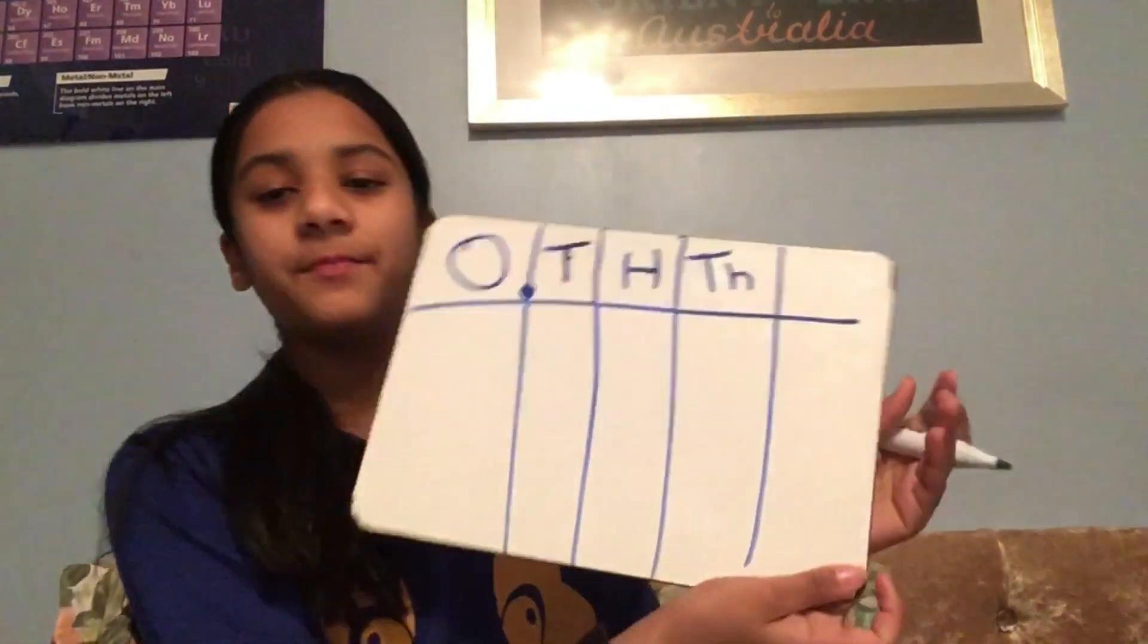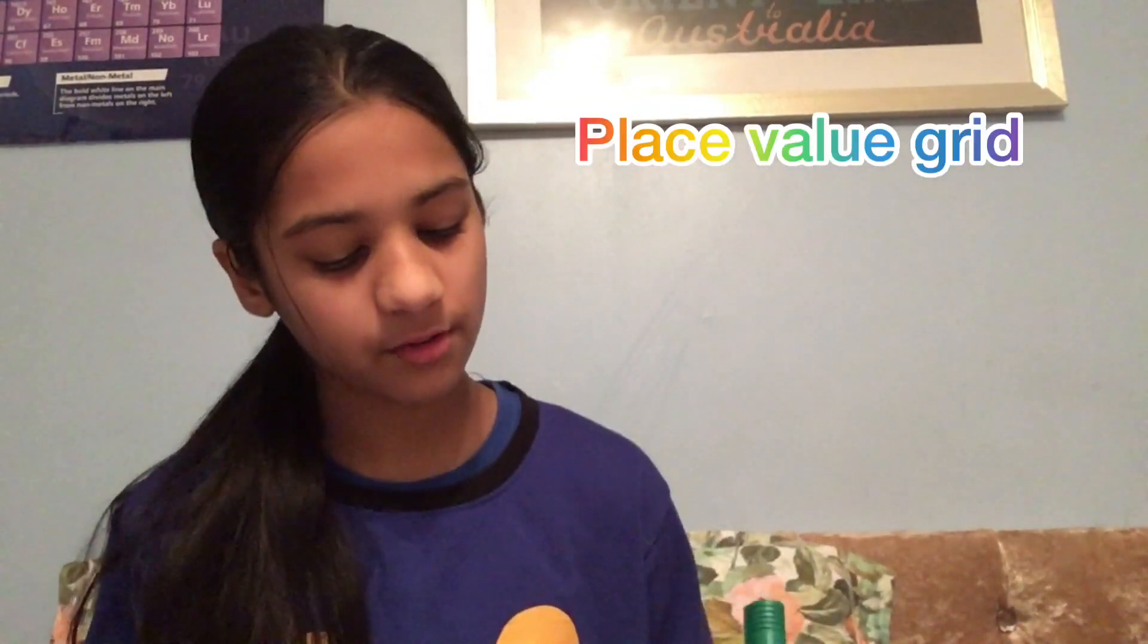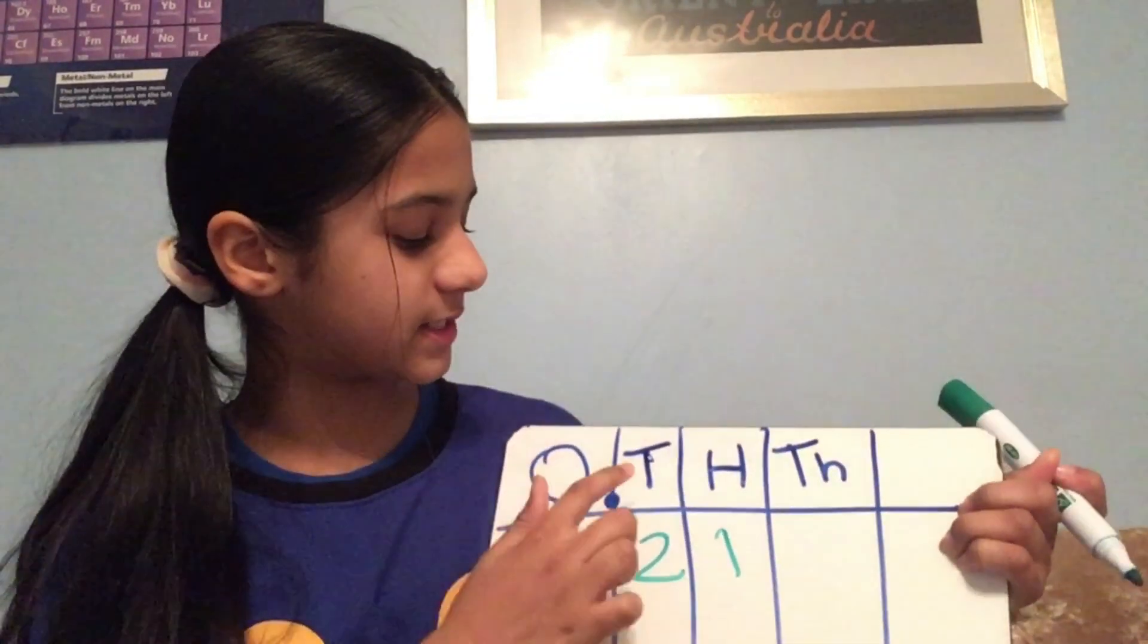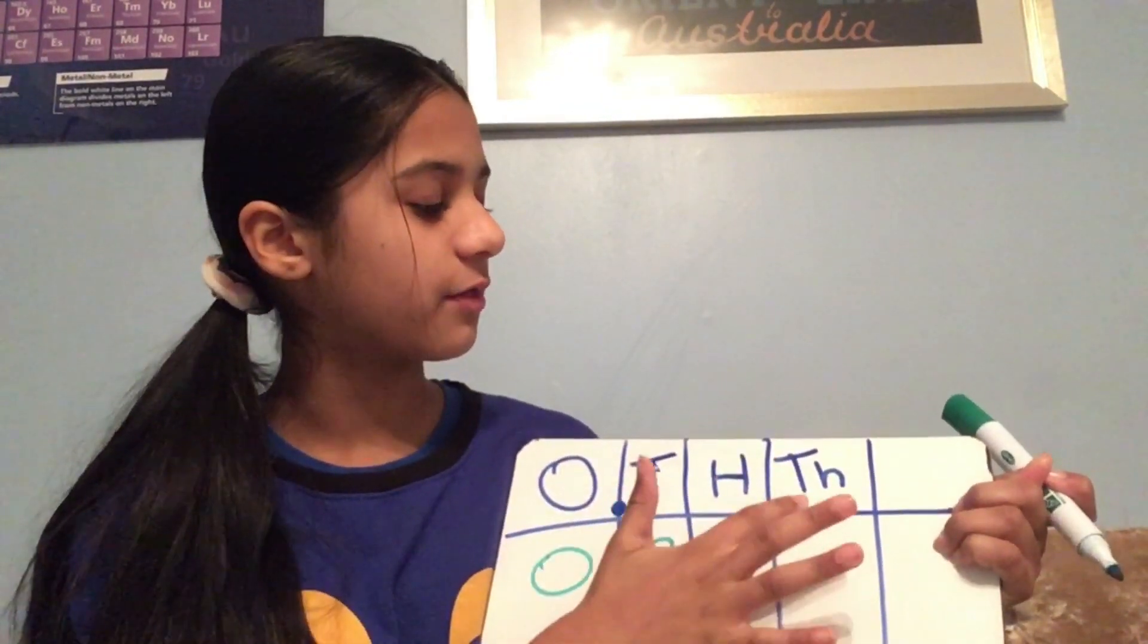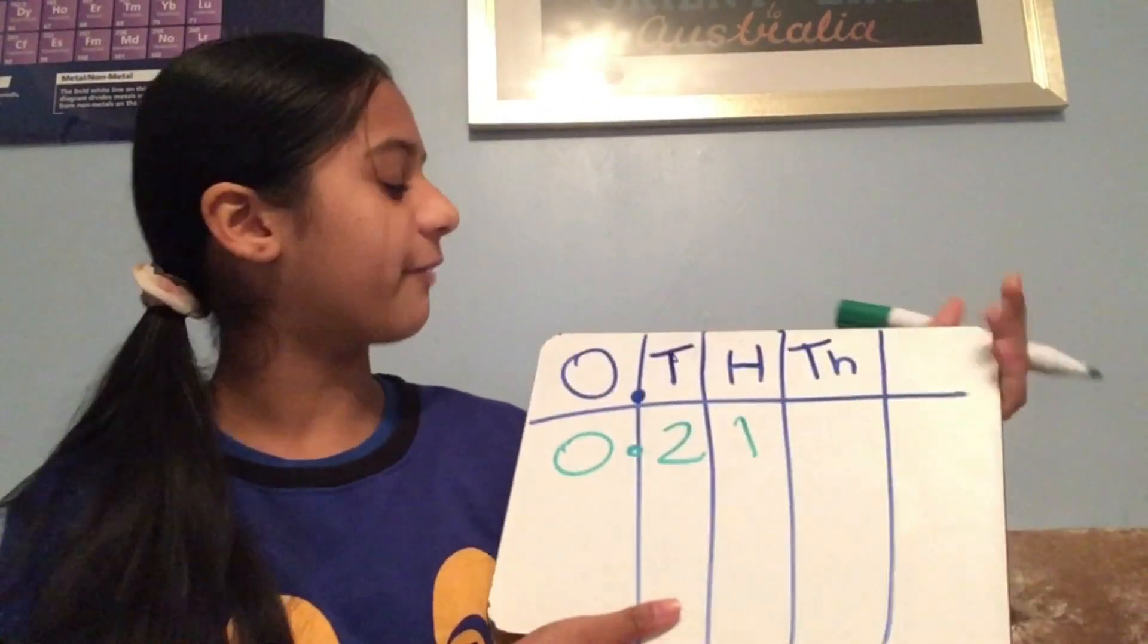Now, what I've drawn here is almost like a place value chart to make it easier. So, let's say you do 0.21, like this. So, as you can see, this is the 1s, these are the 10ths, 100ths, 1,000ths, I don't know, 10,000ths, but we don't need that for now.